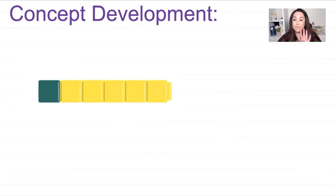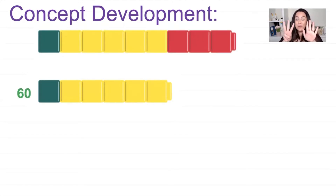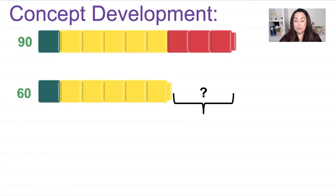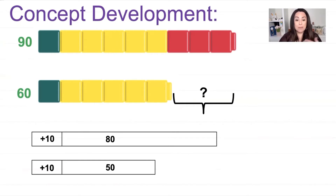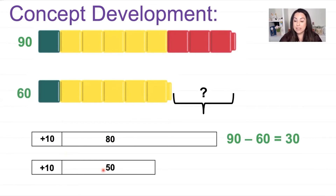Now I have five yellow cubes and I added a green one. Remember each cube is worth 10: 10, 20, 30, 40, 50, 60. Then on top, I had five yellow and three red — that was 80 — and if I add 10 more, that is 90. The difference is still 30. Now making this into a tape diagram: I started with 80 on top and 50 on the bottom, then added 10 to each. So 10 plus 80 equals 90 and 10 plus 50 equals 60. Therefore 90 take away 60 equals 30 — the difference is still the same.